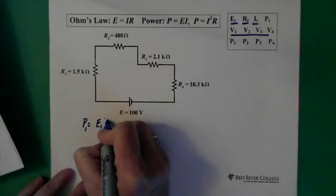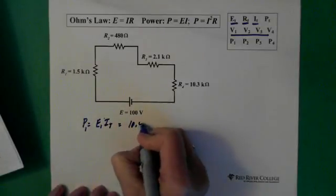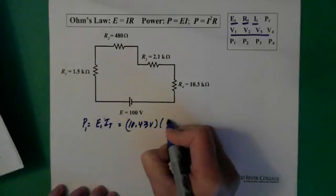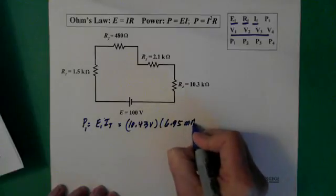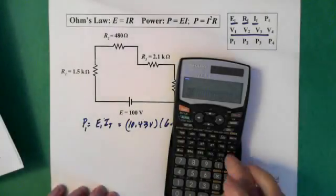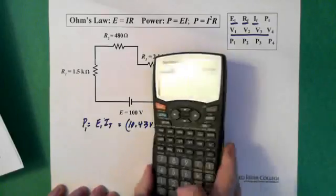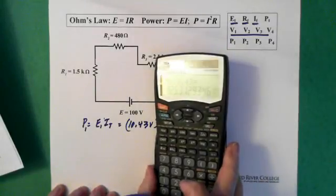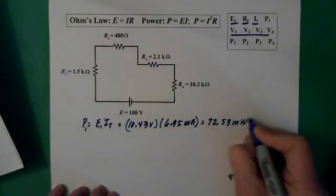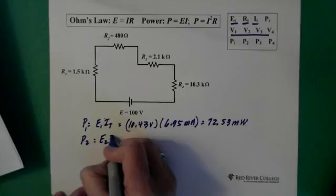Power one is E1 times I total. E1 is 10.43 volts and our current is 6.95 milliamps. So grab that current from memory again and multiply it by 10.43 equals 72.53 milliwatts.